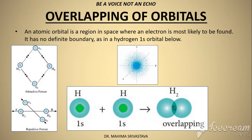An atomic orbital, as we know, is a region in space where there is the highest probability of finding an electron. In this case, an atomic orbital is called atomic orbital. As you can see in this box, the center of the dark coloration and the side of the light coloration is shown — the spherical shape is like this.